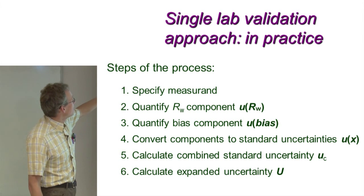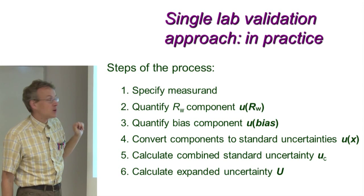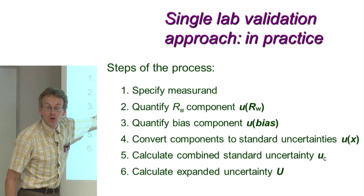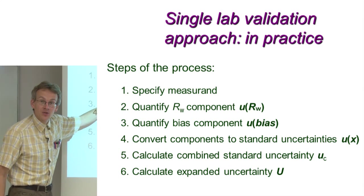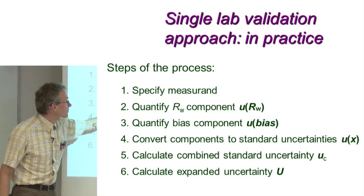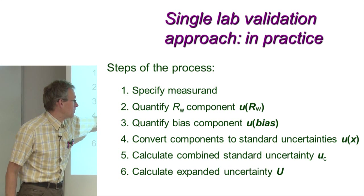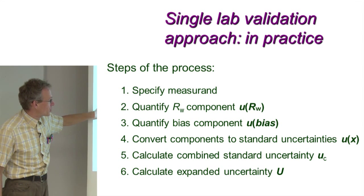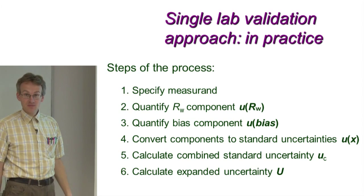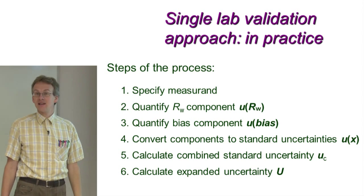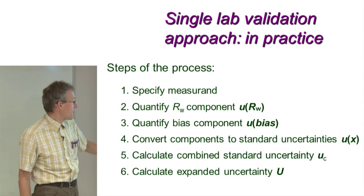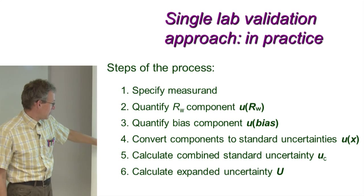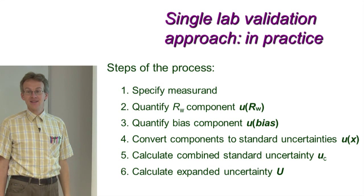In the second and third steps, we quantify separately the URW component — the component taking into account the random effects — and the component taking into account the possible bias. Both components need to be converted to standard uncertainties, and the rest goes exactly as in the modeling approach: we calculate the combined standard uncertainty and finally the expanded uncertainty.